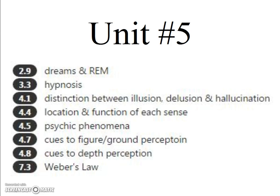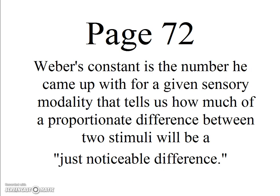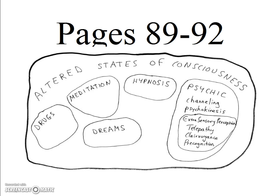In Unit 5, students want to know more about Weber's Law. That says that a person's ability to distinguish between two stimuli is determined not by the absolute difference in the intensities of those stimuli, but by the relative proportionate difference in their intensities. Weber's constant is a number he came up with for a given sensory modality that tells us how much of a proportionate difference between two stimuli will be just noticeable by the subject. What I think is important from Unit 5 is the different kinds of psychic phenomena — you have to know the difference between telepathy, clairvoyance, and precognition.